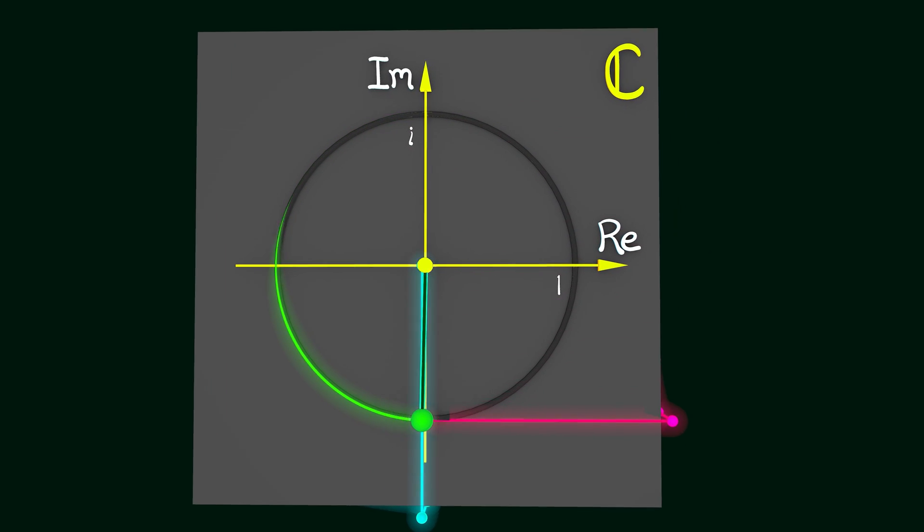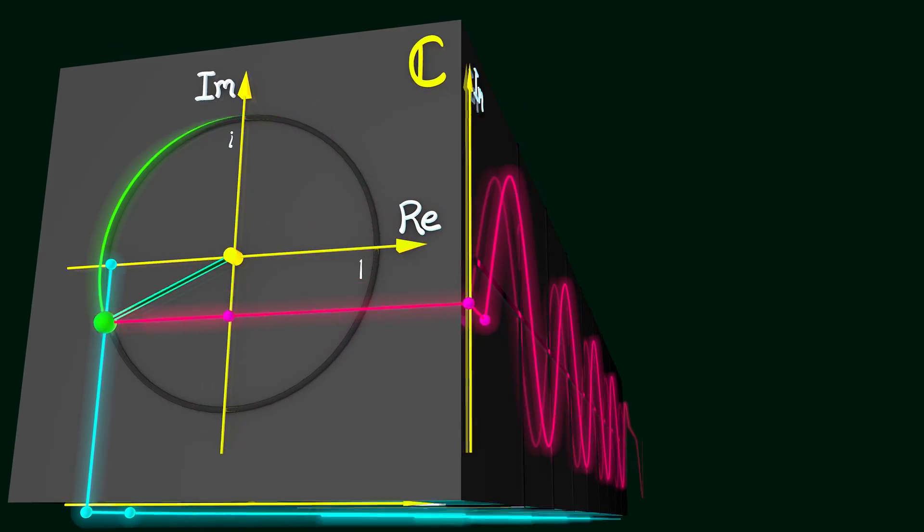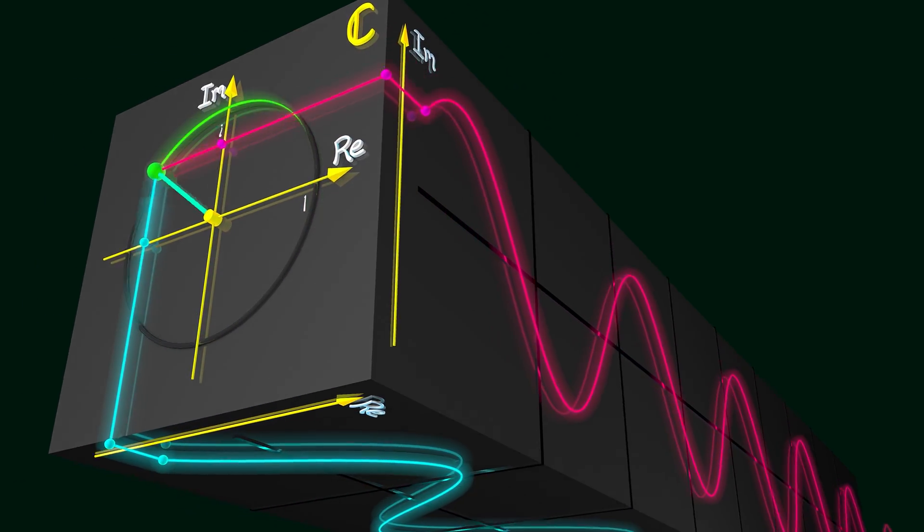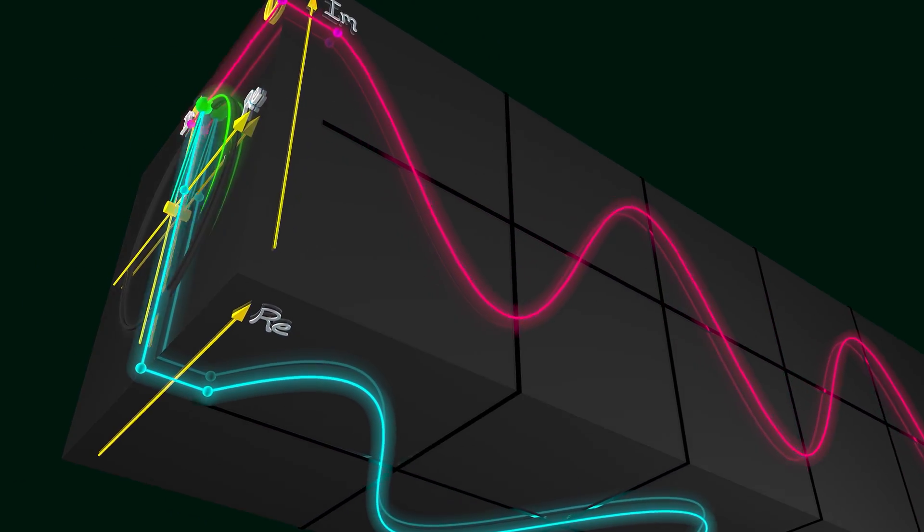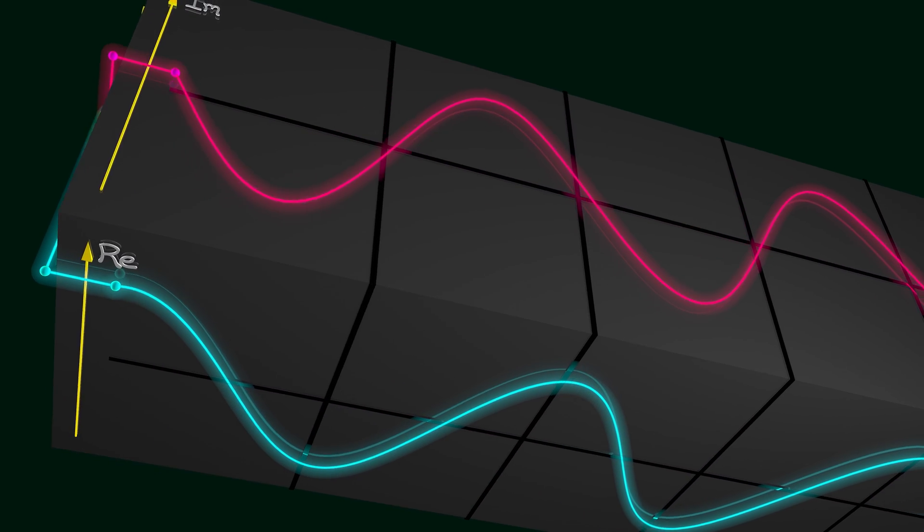This makes sense, right? The unit circle is defined by x² + y² = 1, and you've got cos²(x) + sin²(x) = 1. This all fits together.